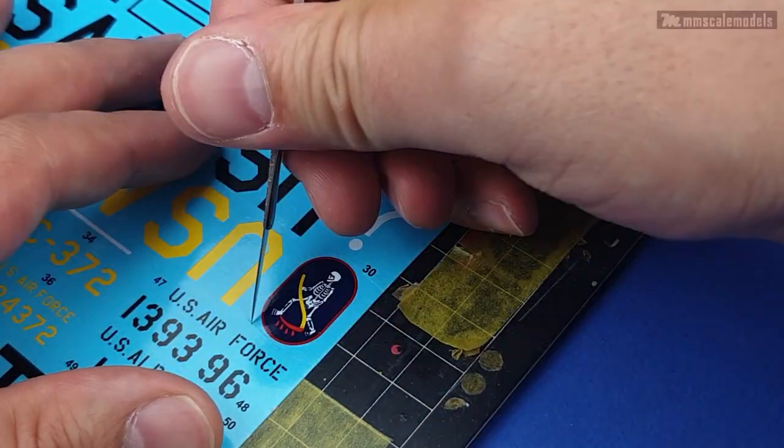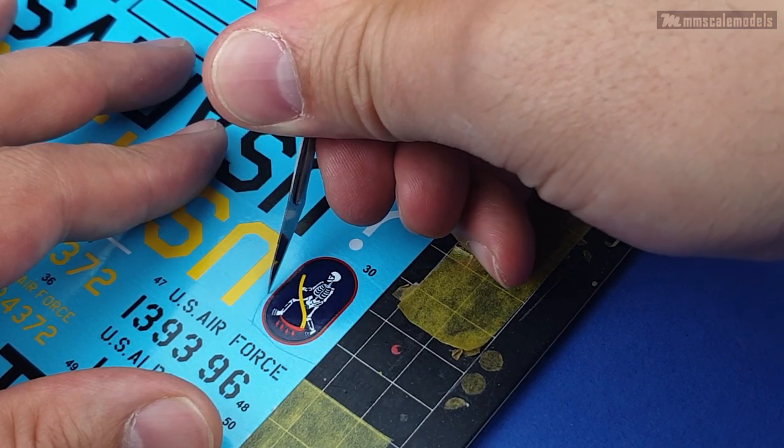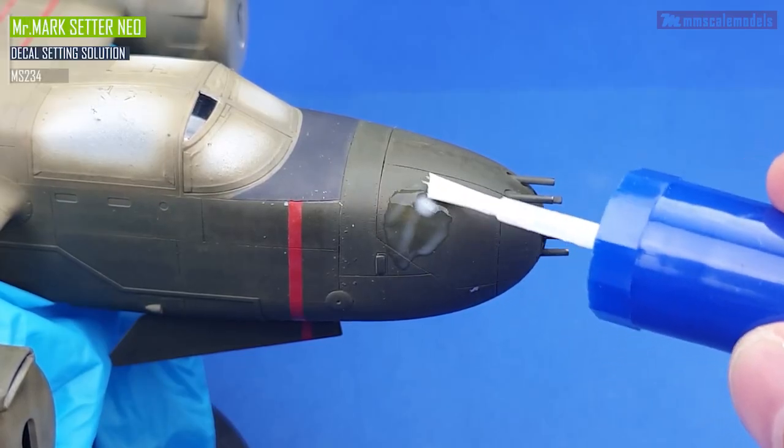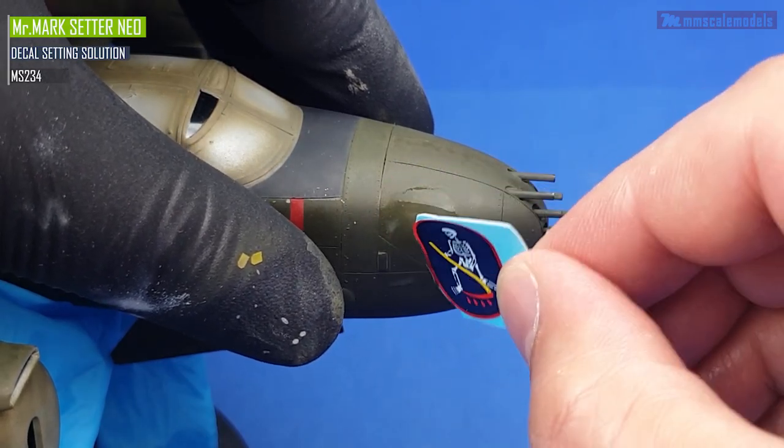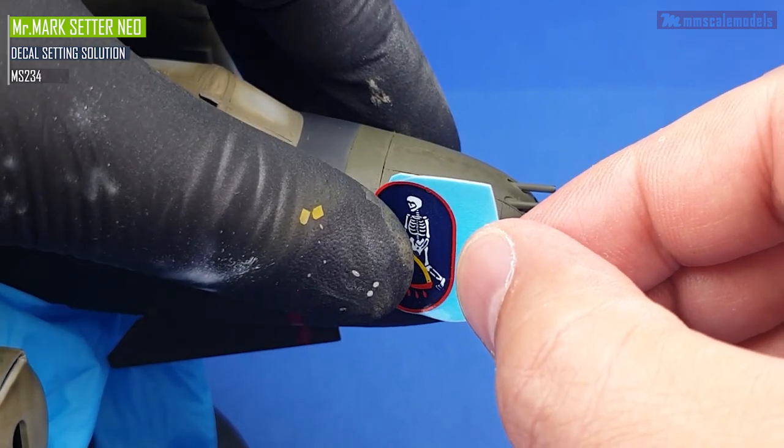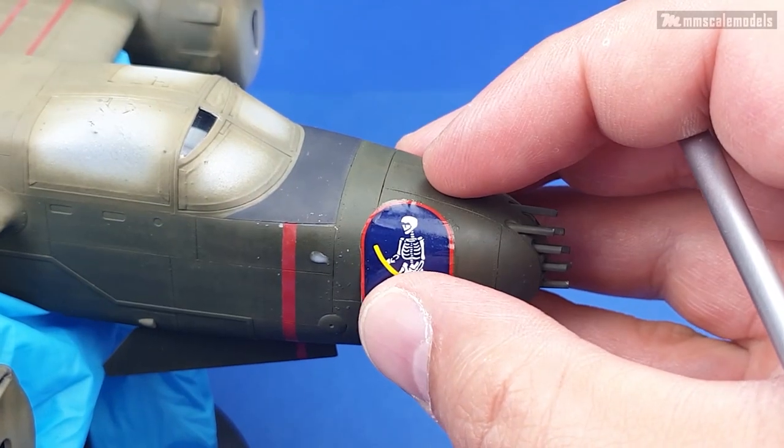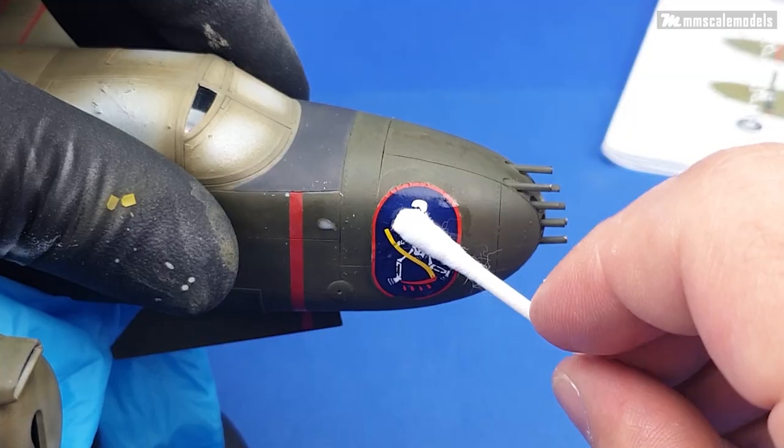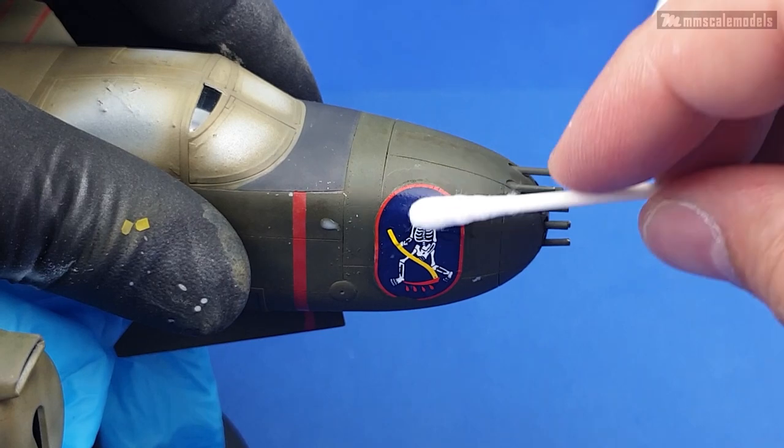The nose art practically does not have any carrier film or if there is some it is minimal, so I will go ahead and attach it directly without any kind of varnish. Okay, it is time to apply the nose art decal. One benefit of the matte surface is that there is no surface tension to speak of and I can spread the mark setter without it accumulating in certain areas. Now let's squeeze out the excess solution and water.